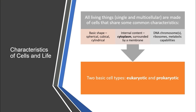Let's start by talking about the characteristics of a living cell. All living things are made up of cells that share some common characteristics. A living thing can be composed of a single cell or multiple cells — we call them single or multicellular organisms. The basic shape can be spherical, cubical, or cylindrical, and the internal content of a cell is composed of cytoplasm surrounded by a membrane.